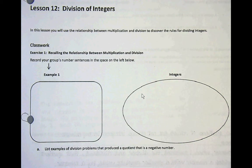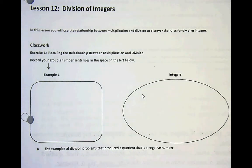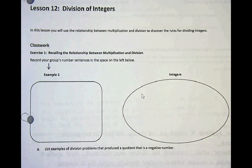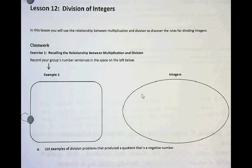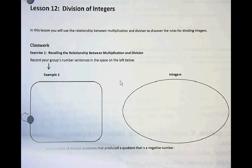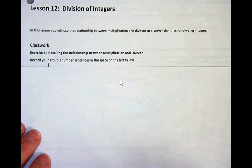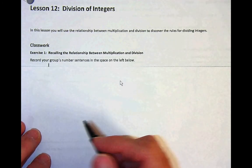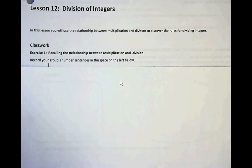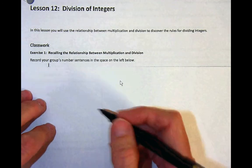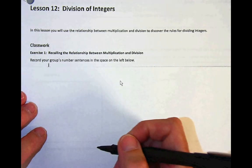We're going to go ahead and finish up our talk on operations with integers with our last operation, which is division. Before we start with the classwork exercise one and using example one, you'll notice you have a box and an oval. I'm going to do it on a separate sheet of paper. What it's asking you to do is to record — and we're going to do this individually — is to pick a number sentence or a number fact.